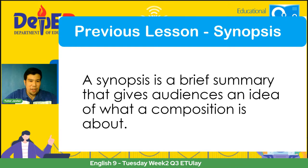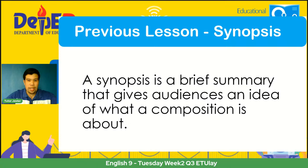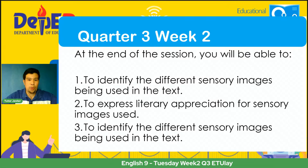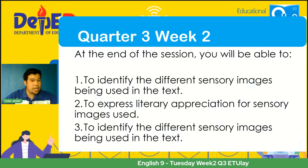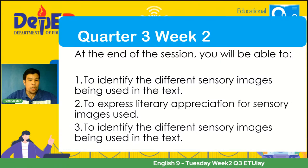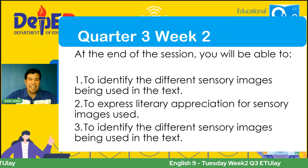Now, let's proceed with our third quarter week two objective. At the end of this session, you will be able to: number one, identify the different sensory images being used in the text or in any literary piece; two, express literary appreciation for sensory images used — not only learning, but also appreciating; and third, identify the different sensory images being used in the text.